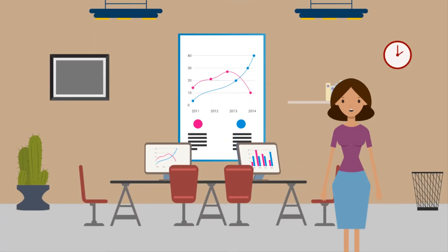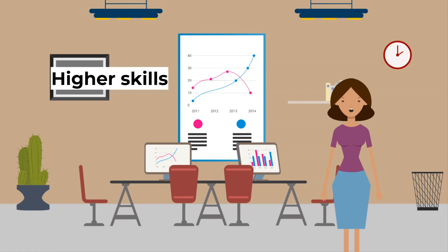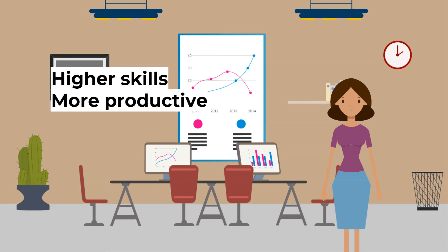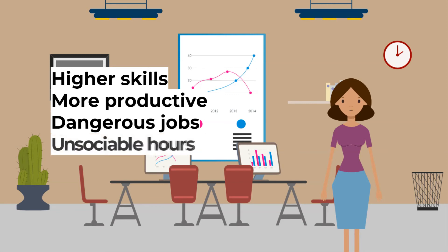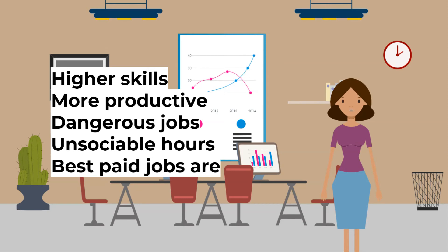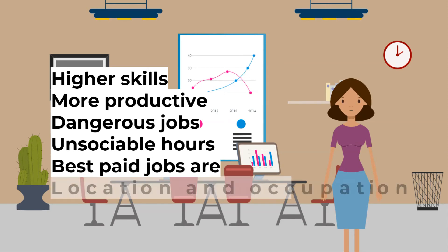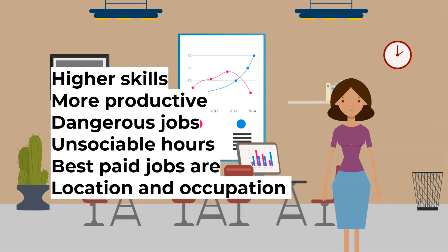What explains wage differentials, or the amount that people receive for their labor? Some workers are paid more than others because they are more highly skilled and are much in demand by employers; they are more productive and add more to output and revenue; they work in dangerous jobs, for example soldiers or firefighters; they work unsociable hours; they have more information than other workers about where the best-paid jobs are; or they are more able to move location or change their occupation to increase their pay.